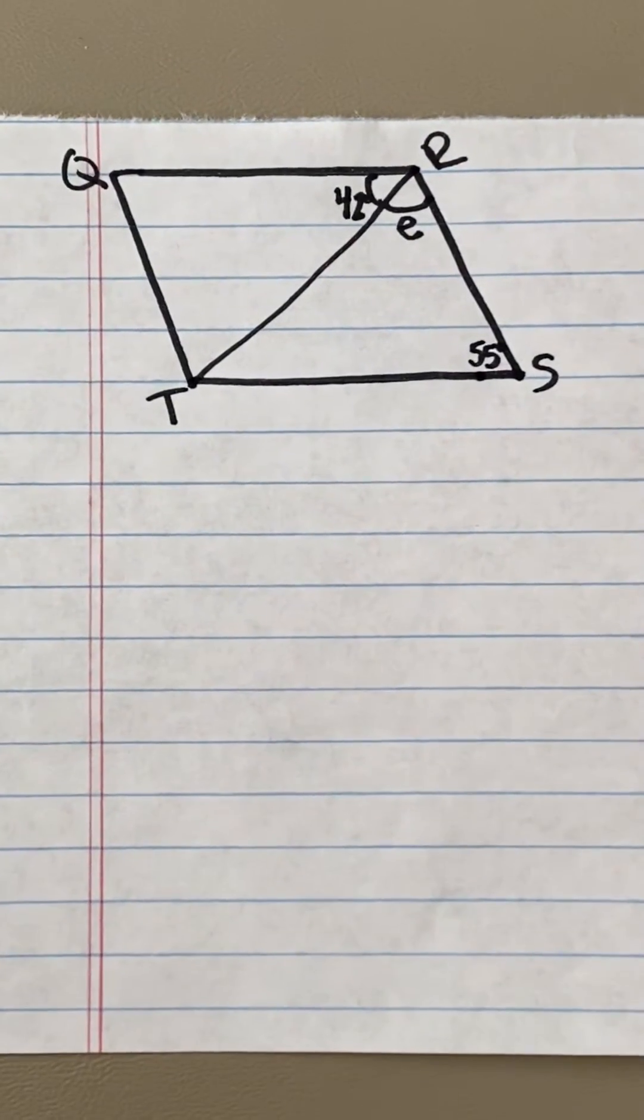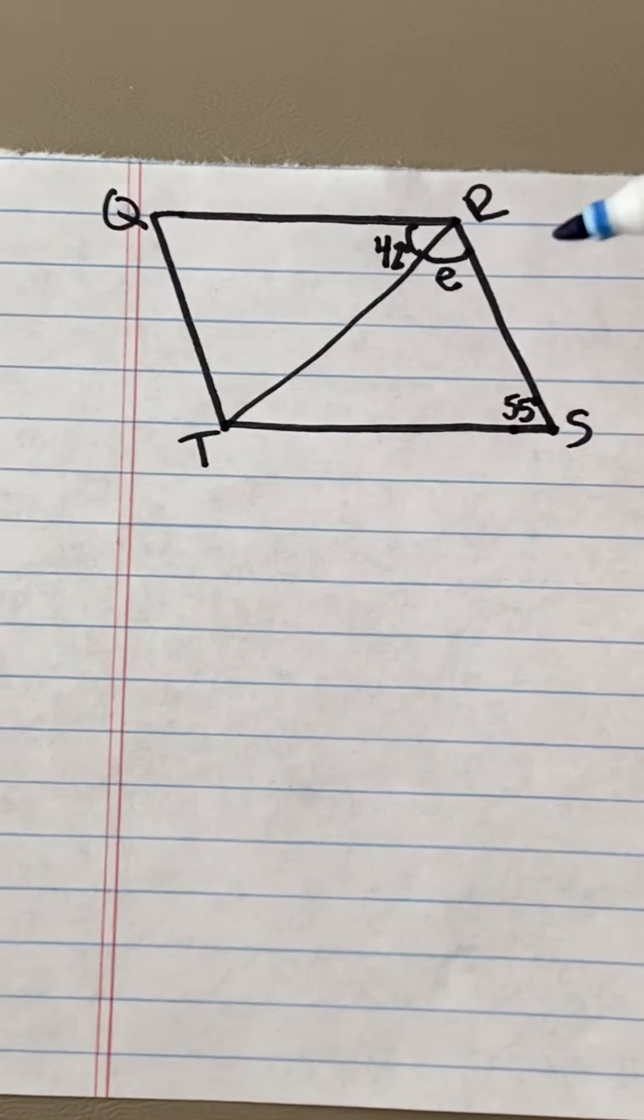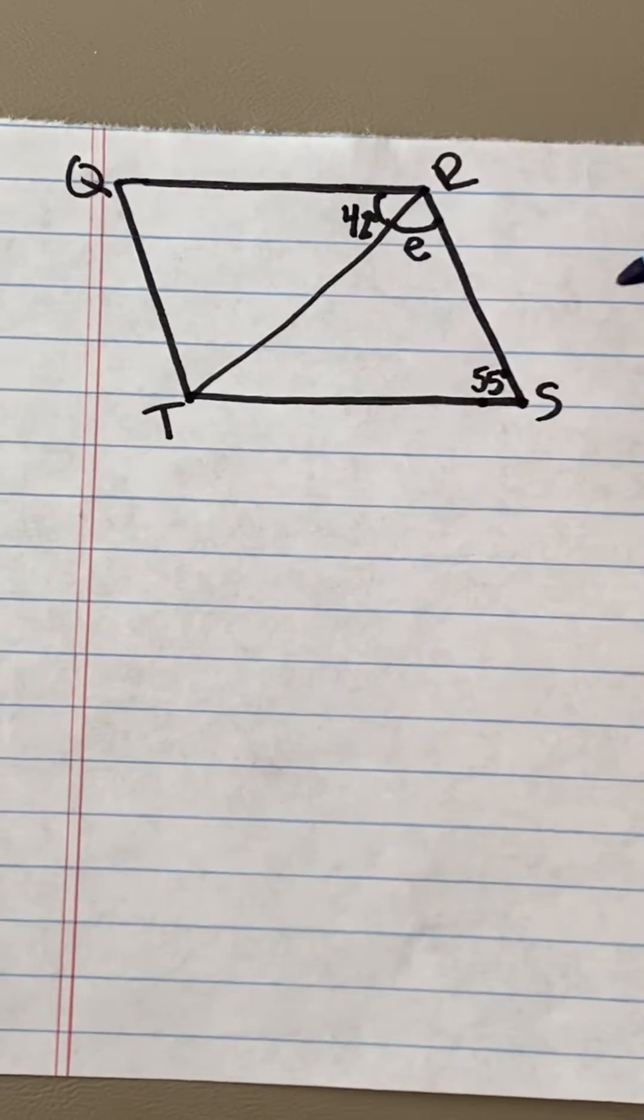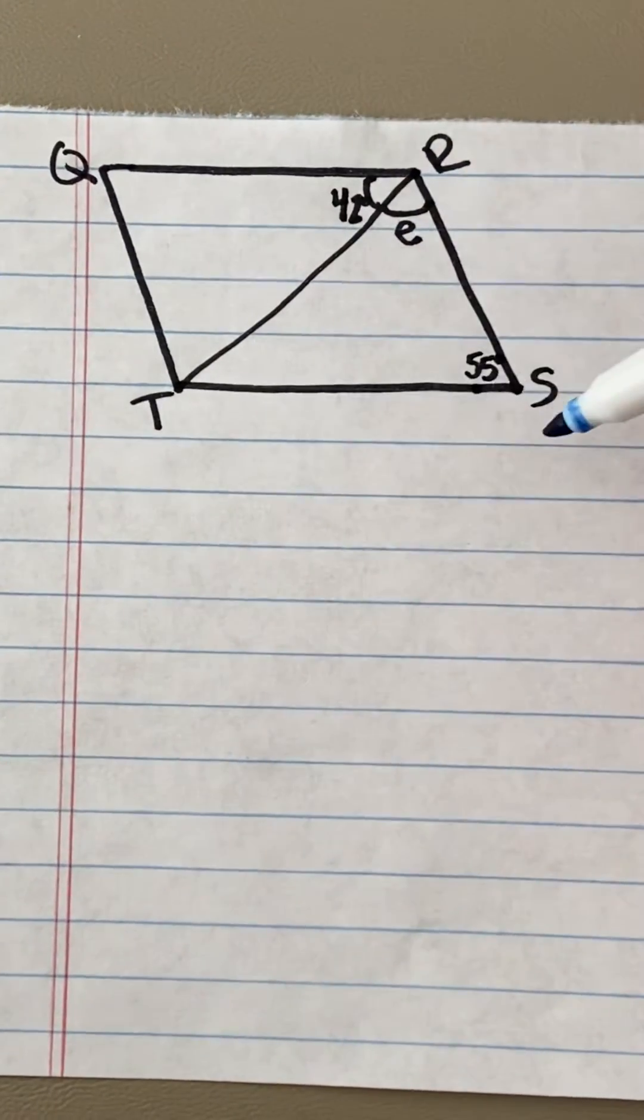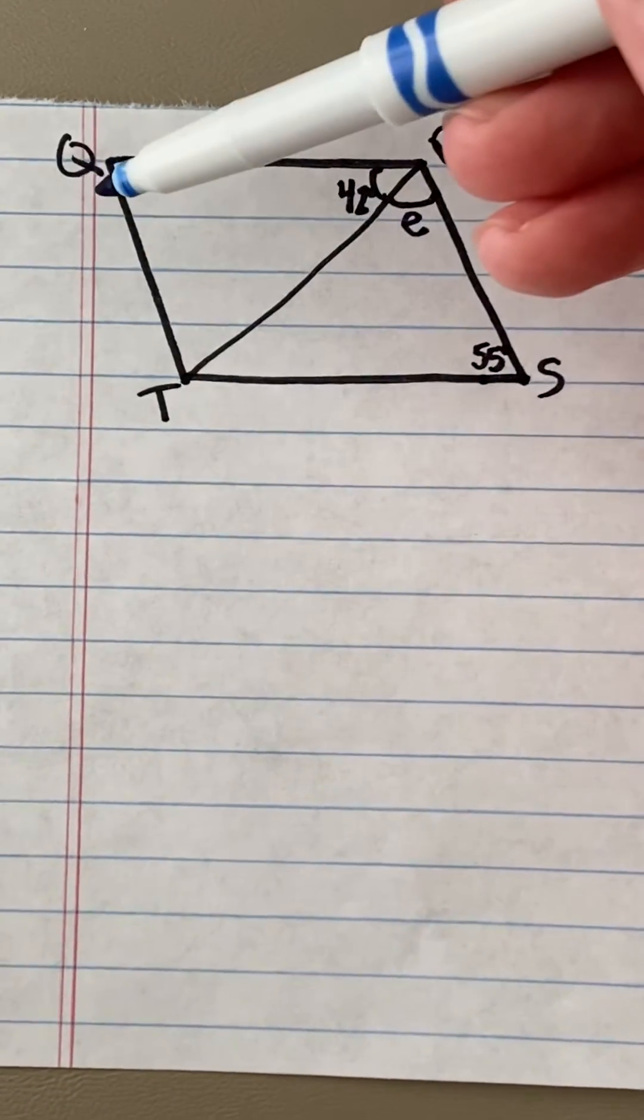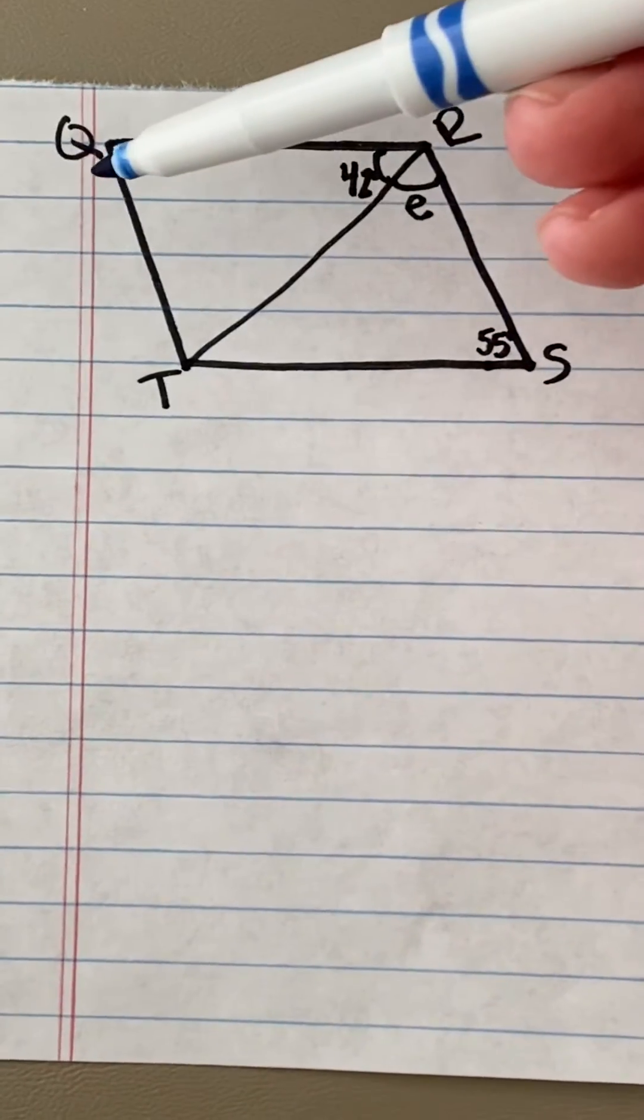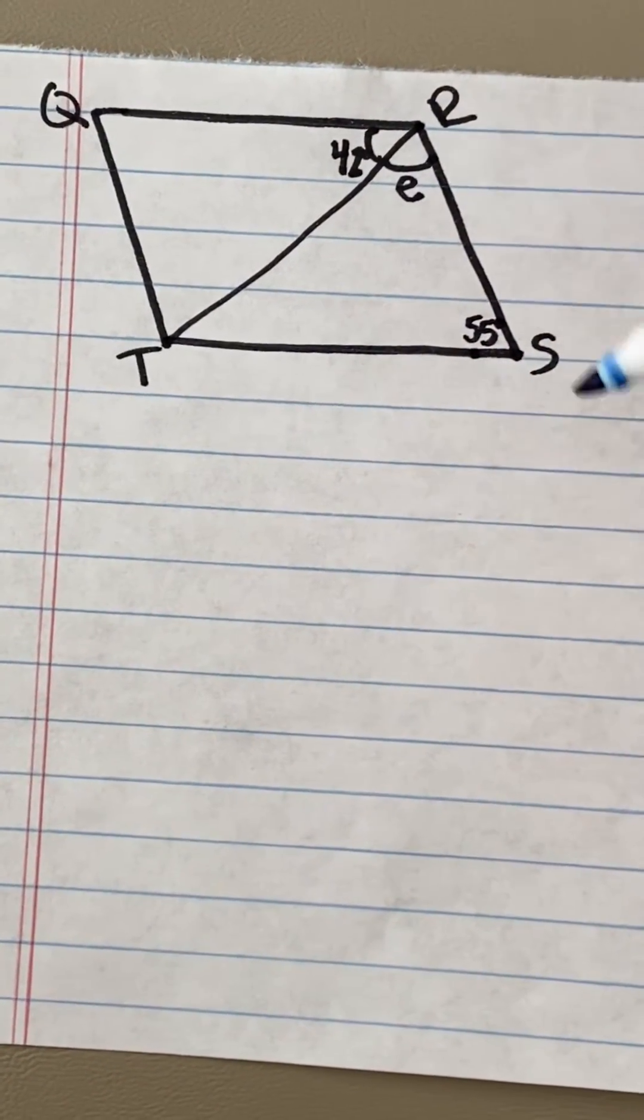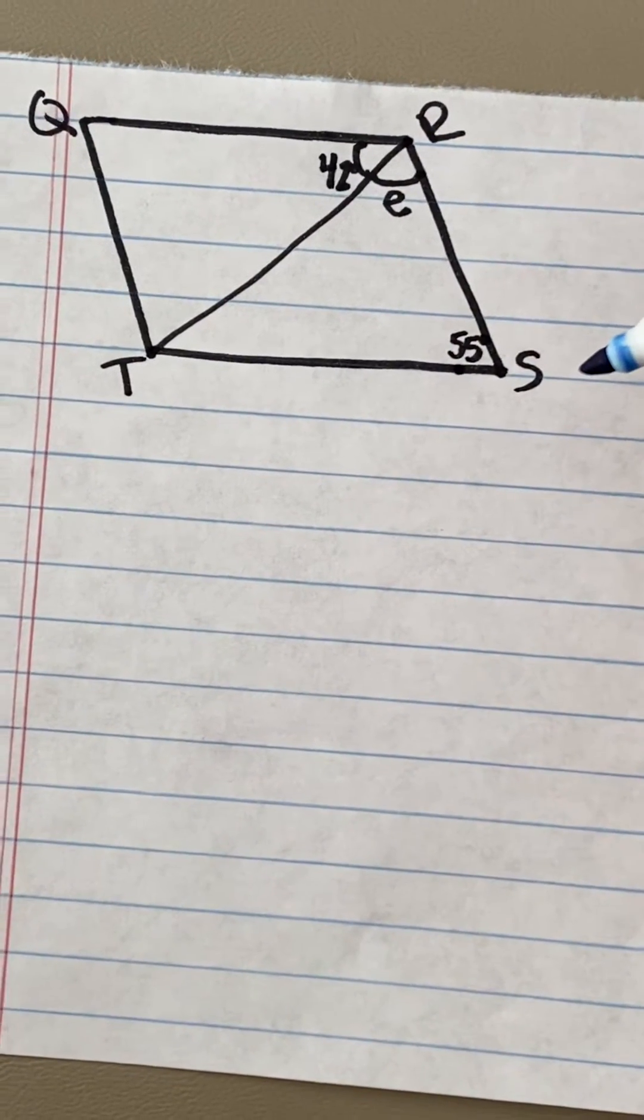We have the figure QRST and it is a parallelogram. Remember parallelograms have two sets of parallel lines. So QR is parallel to ST and QT is parallel to RS, which means that those line segments will never intersect.